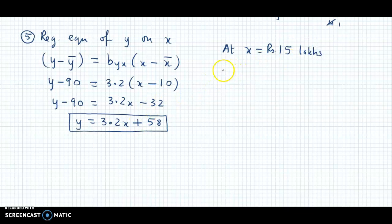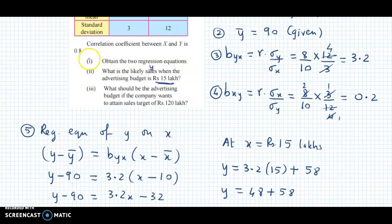Using this equation, we predict y's value. y will be 3.2 × 15 + 58. If we simplify this, 3.2 × 15 is 48, plus 58. If we add these, y's value comes to ₹106 lakhs. We have obtained y's value. That is, we have finished the second part.